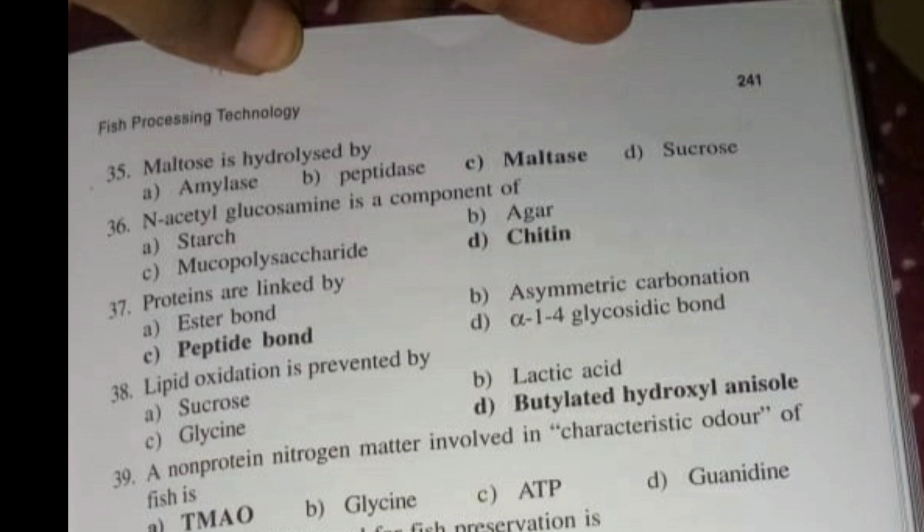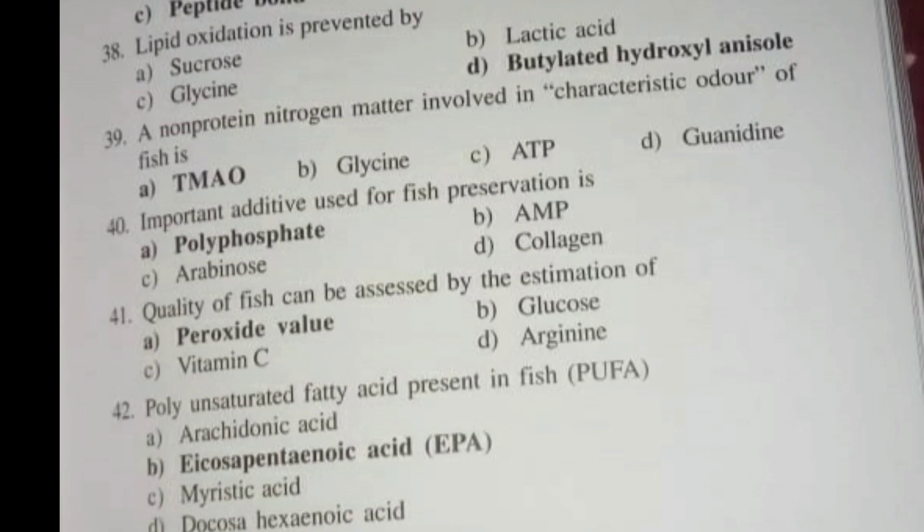Question 39 - A non-protein nitrogen matter involved in characteristic odour of fish. The answer is DMAO (TMAO). Question 40 - Important additive used for fish preservation. The right answer is Option A, Polyphosphate.